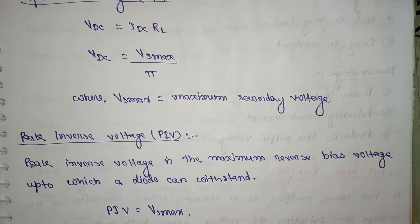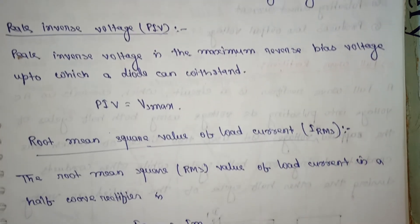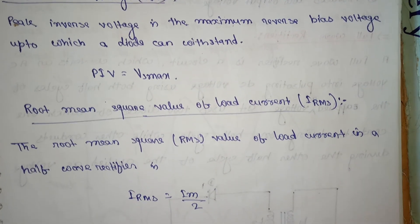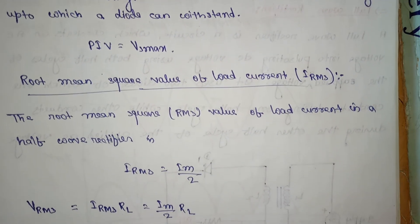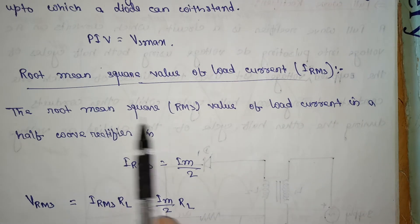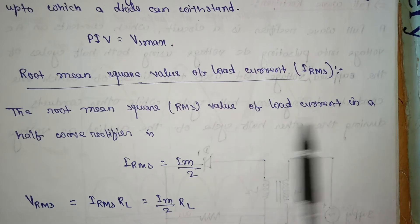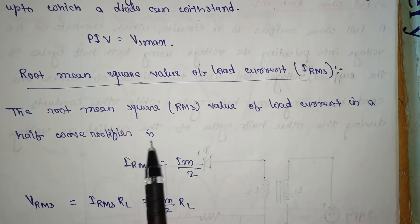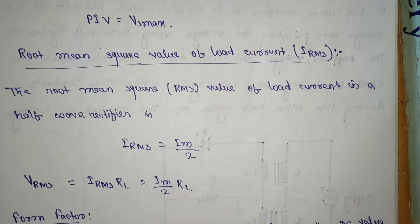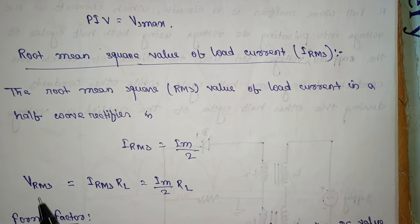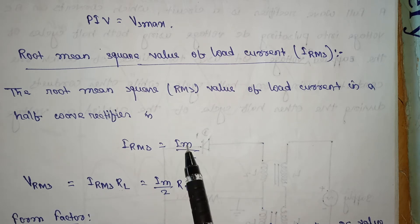Next, root mean square value of the load current. That is RMS, the root mean square value of the load current in a half wave rectifier. IRMS is equal to IM by 2, or VRMS is equal to IRMS into RL.